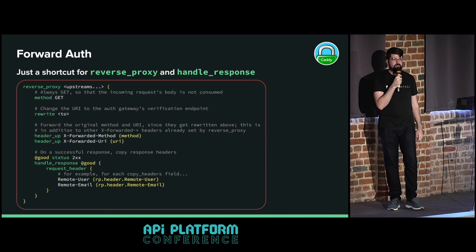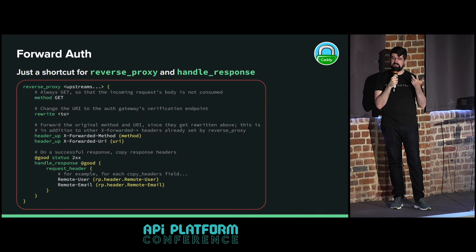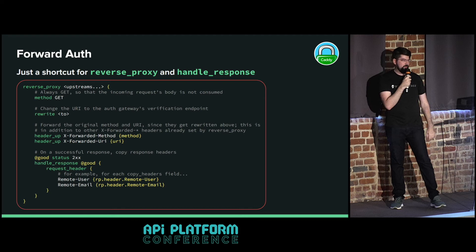The forward_auth directive is actually a shortcut for a reverse proxy with a handle_response. In the expanded form, it always uses method GET, always does a rewrite, always adds extra headers to the request going to Authelia, and has a handle_response block that, when the status is successful, copies the response headers back onto the request.